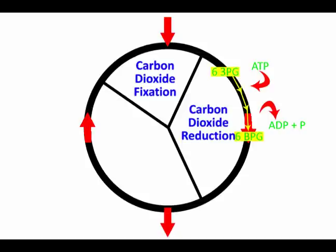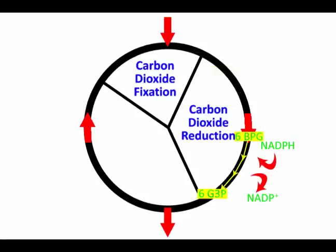Next, the BPG becomes G3P when NADPH is added. The NADPH then becomes NADP+. This sequence signifies the reduction of carbon dioxide to a carbohydrate.